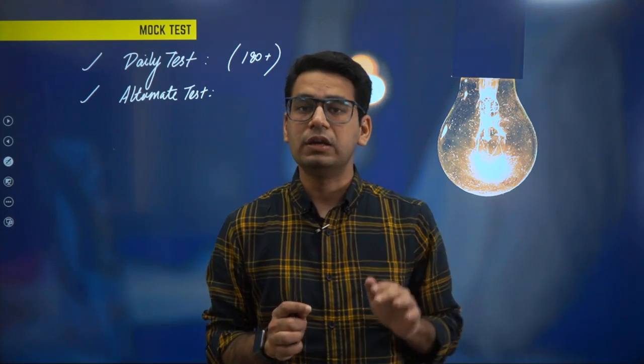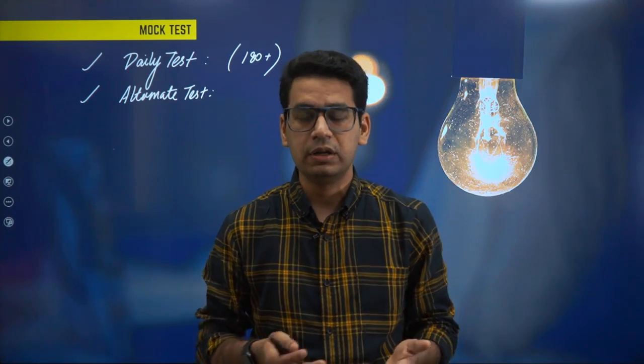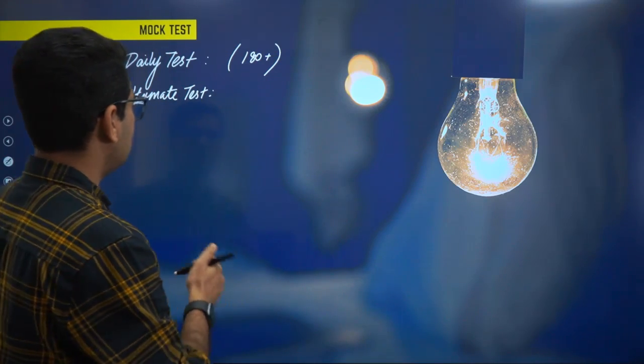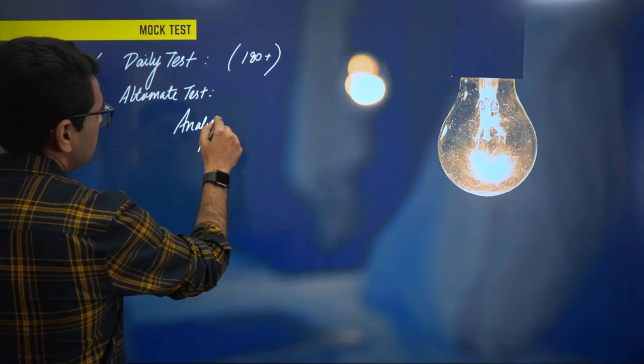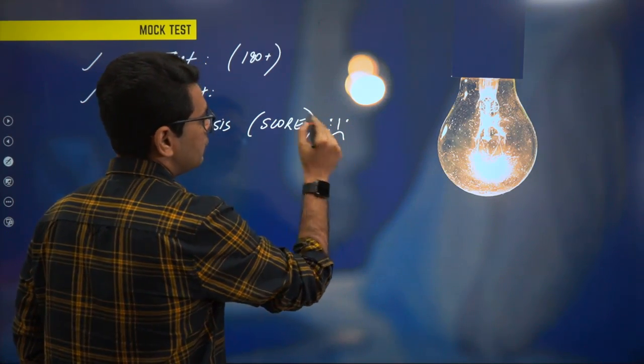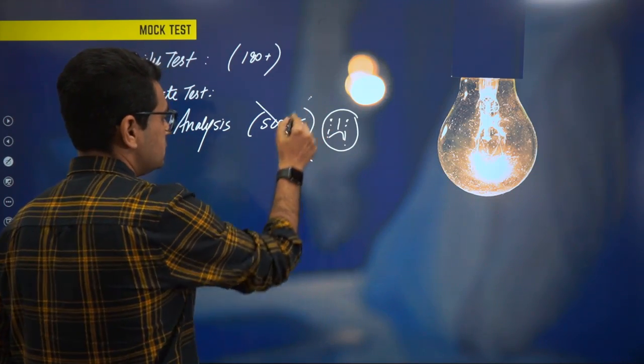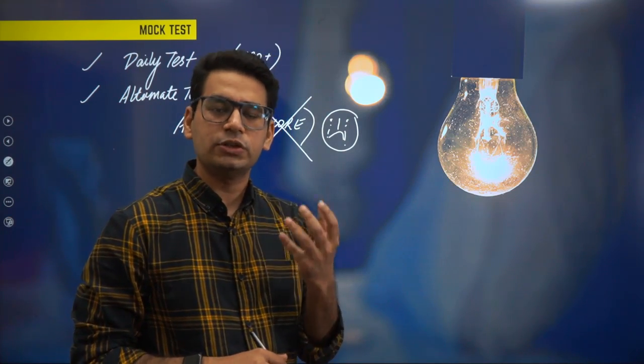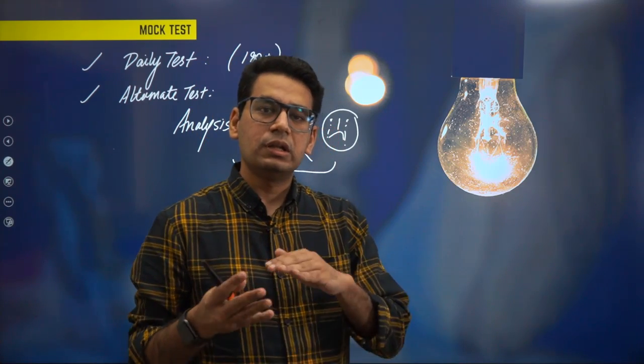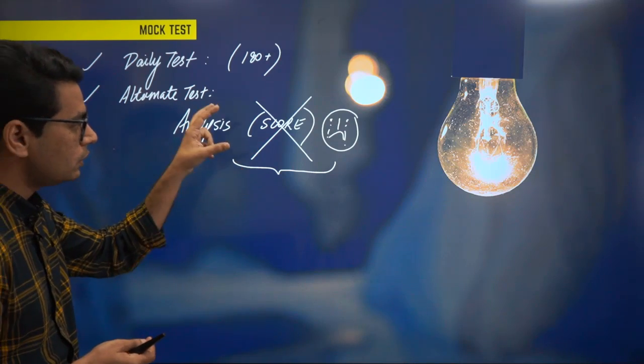Aapko koi pressure nahi hona chahiye ki mere dost daily de raha hai to mujhe bhi dena chahiye. Ye sabse ghatiya tarika hota hai. Ismein ka matlab hua aap apne upar confident hain hi nahi, because you are following your friend. You are not actually doing what you can actually do better. That shows you are not confident. You should be confident about who I am. So understand who you are, aapki preparation kitni hai, aapke liye achha kya hai, wo kaam kariye.